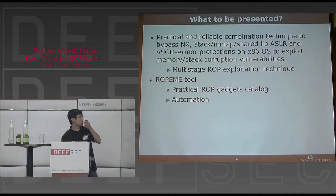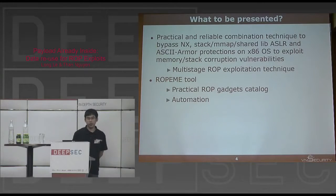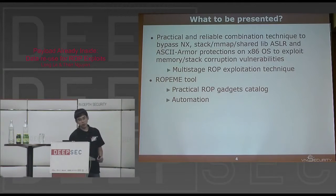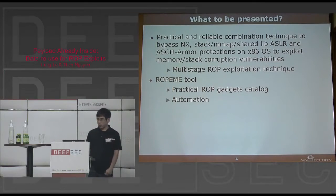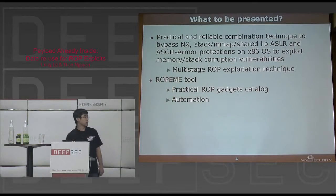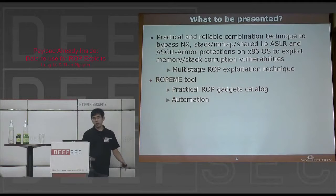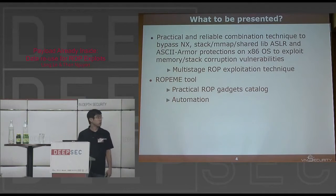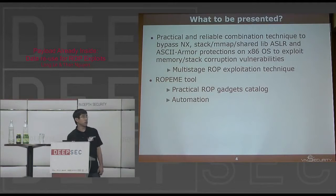In this talk we are proposing and discussing one practical and reliable way, using a combination of multiple different techniques, to bypass NX, stack memory mapping, secondary ASLR, ASCII armor, and AMD protection on x86 operating systems. The demonstration is based on Linux but we have working implementations for BSD, Linux, macOS, and the upcoming one is also Windows.